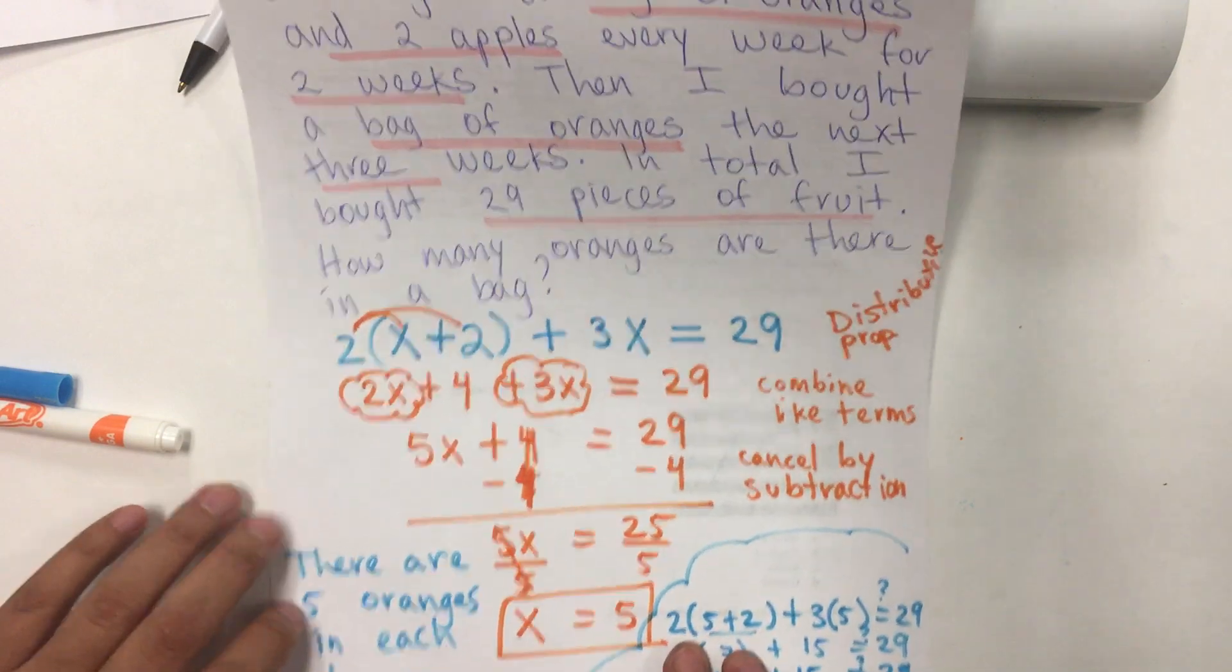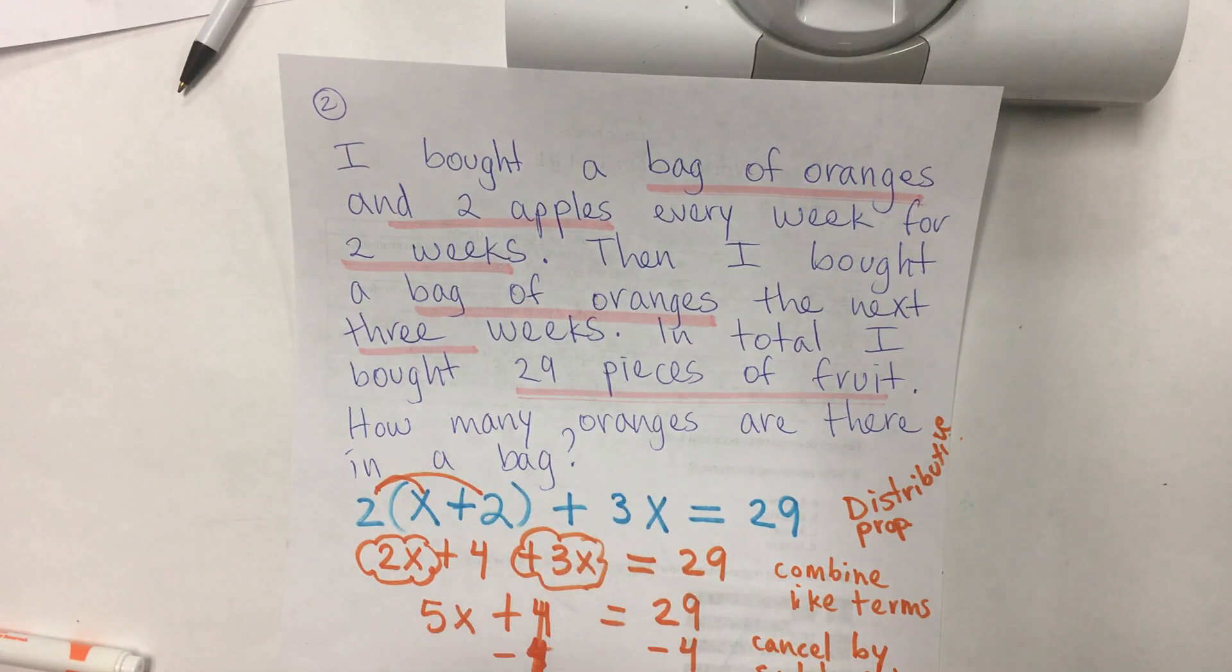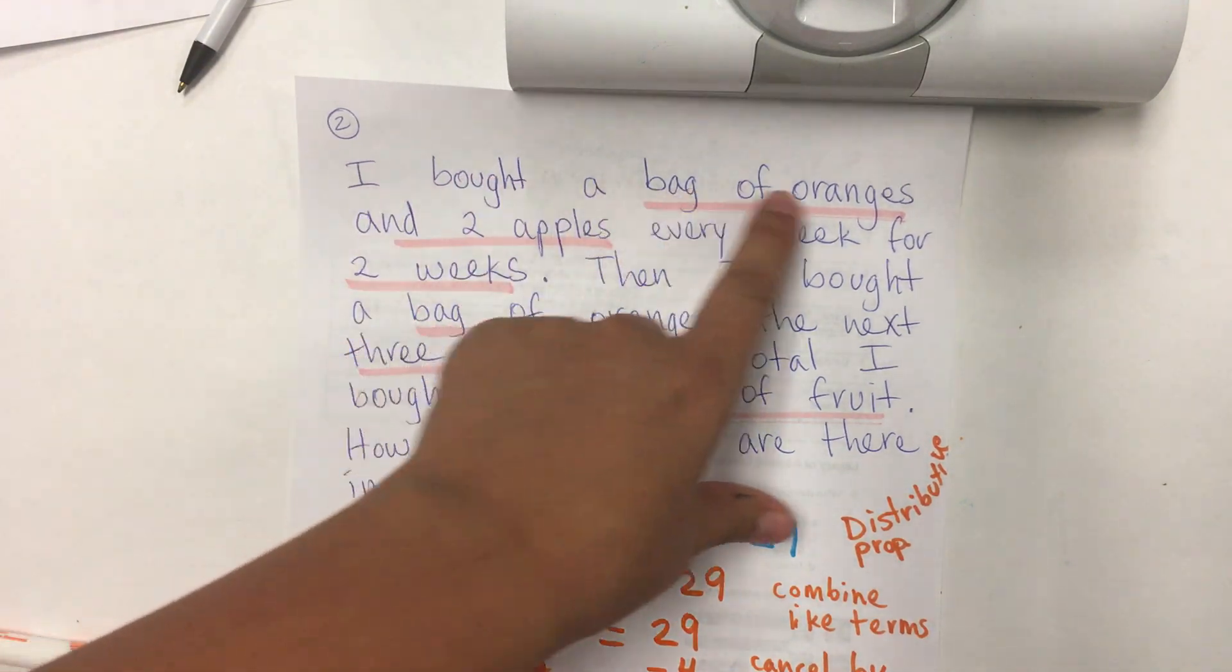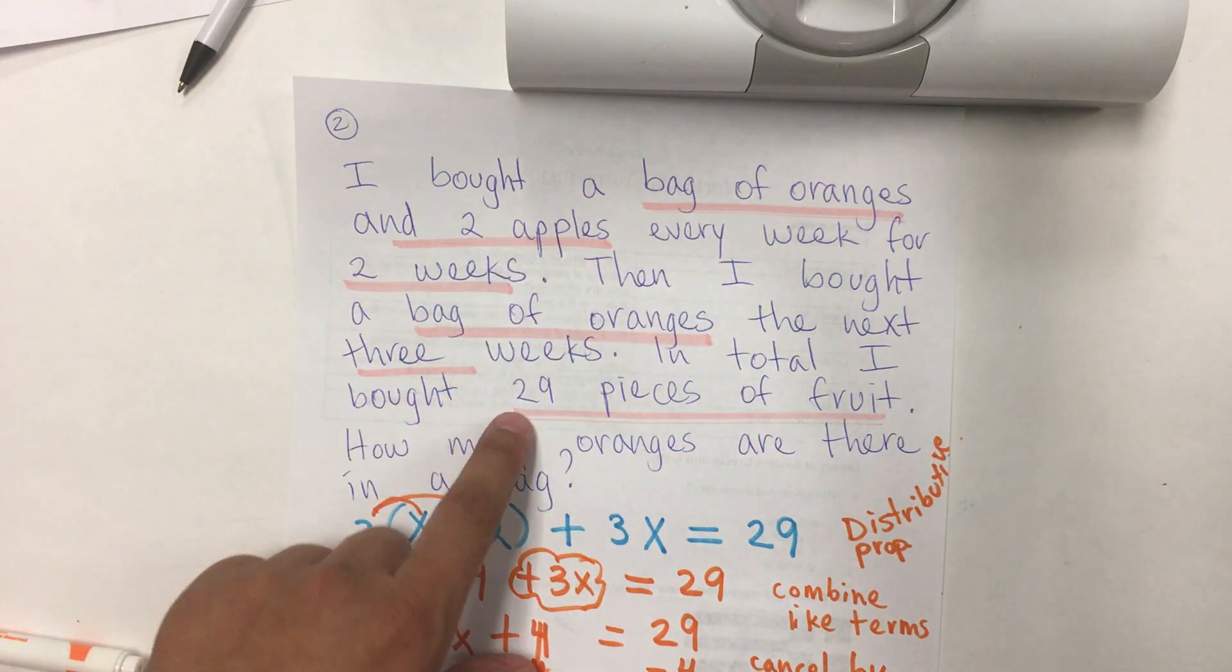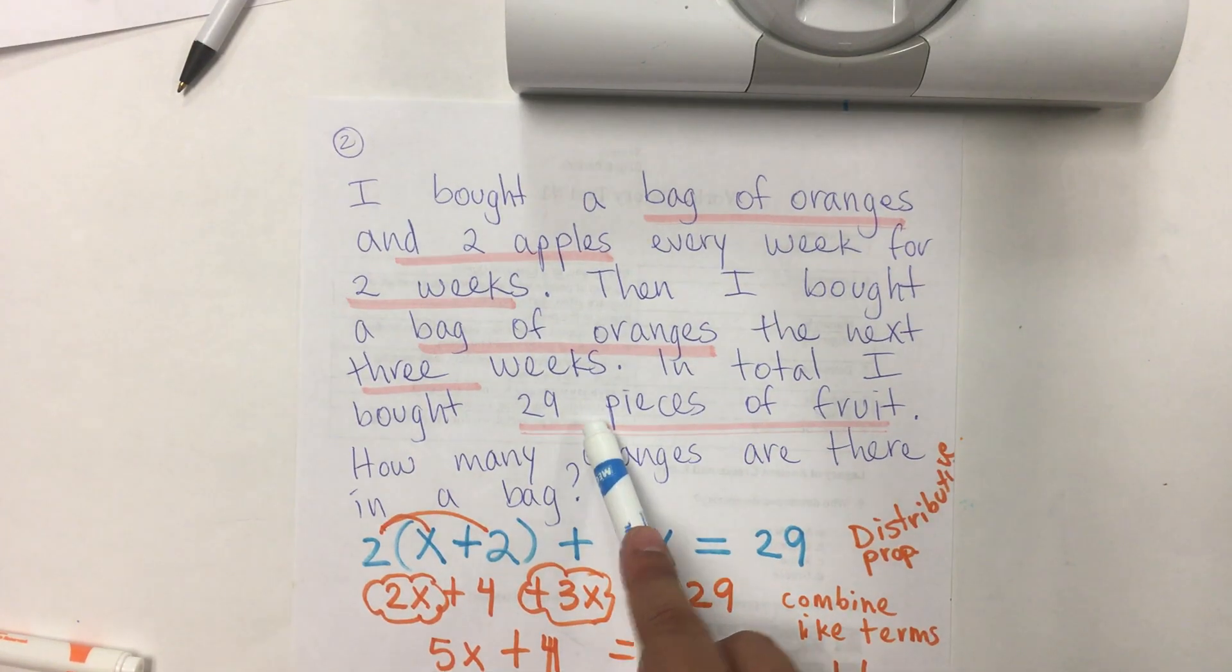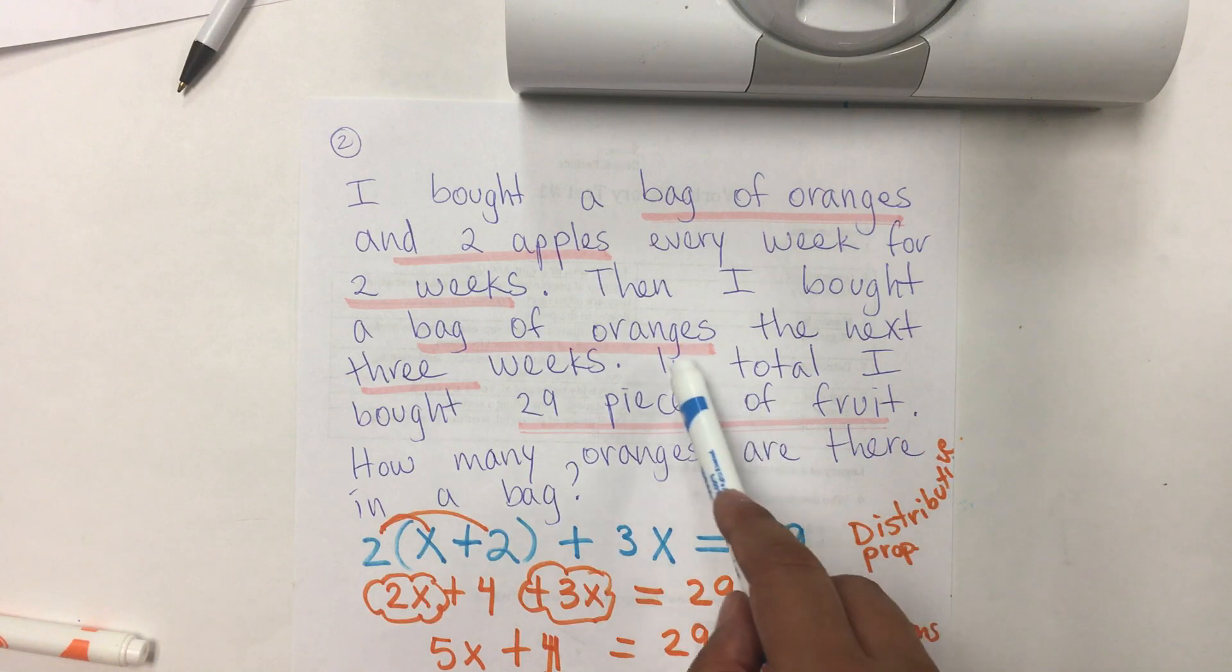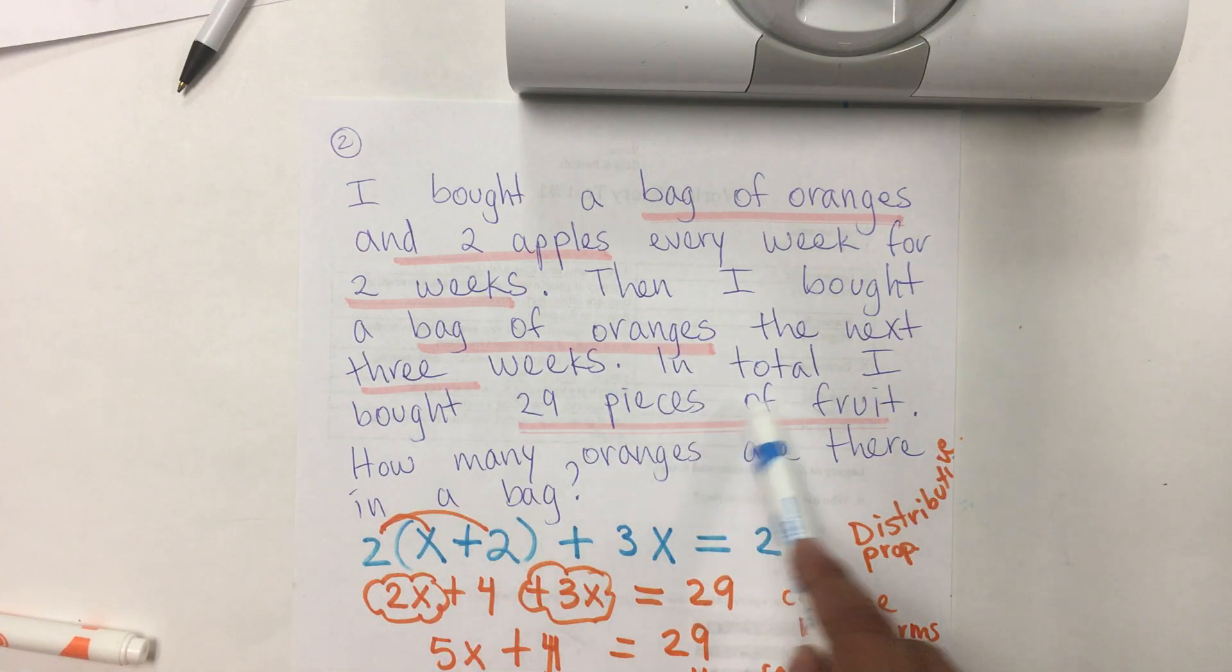So, something that I want to note is that, before, in previous lessons, I said, you need to make sure that you tie this up. It says, I bought a bag of oranges and 2 apples. The contents are different. But, how do they make it so that it's talking about the same thing? In the question, it says, in the last statement, it says, in total, I have bought 29 pieces of fruit.